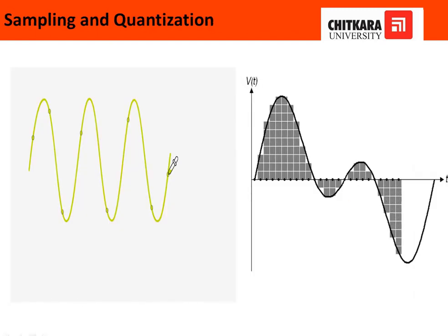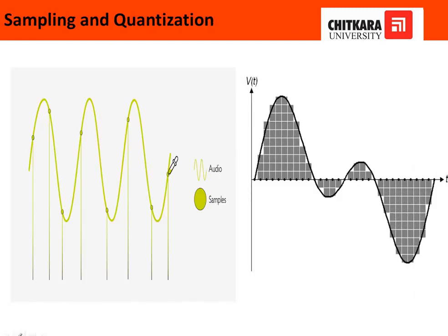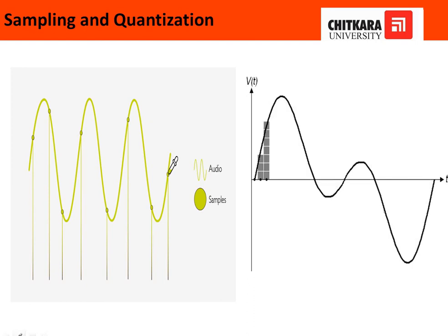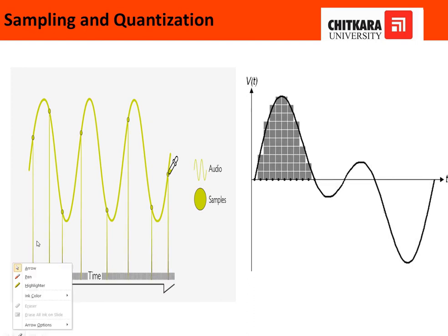If you see this figure, it shows two concepts — one is sampling and another one is quantization. This first figure shows the samples over a finite range of values: first sample, second, and many more. There is a formula which helps to assign a sample value over an infinite range of values.